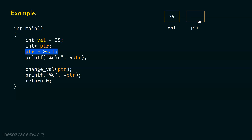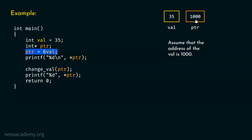Val is a variable of type integer, and this pointer must point to some integer. Therefore, we can assign the address of this variable to this pointer. Let us assume that the address of this variable val is 1000. So we can put this address, that is 1000, inside ptr. This is possible because we have executed the line ptr equal to ampersand val.